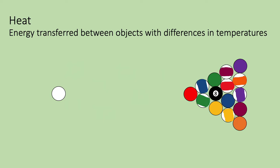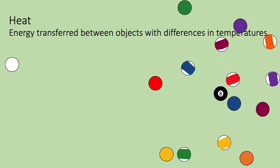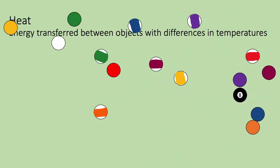Heat is not a measure of the average kinetic energy of a particle — it's actually the amount of energy that's transferred between objects with differences in temperature. Some of the kinetic energy of one molecule is transferred to another molecule, making it move faster. It's like playing pool, where the cue ball is moving and hits the other balls racked up at the end of the table — when the cue ball hits them, all the other balls suddenly start moving. The energy for movement is transferred from the cue ball.